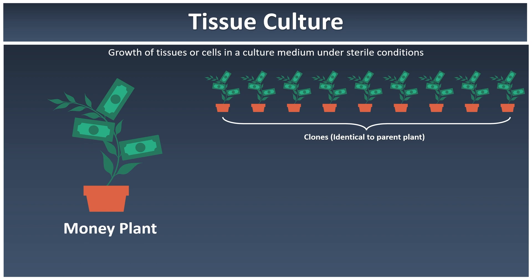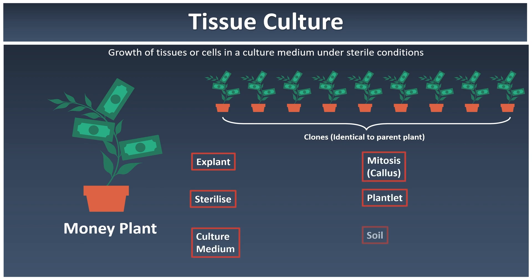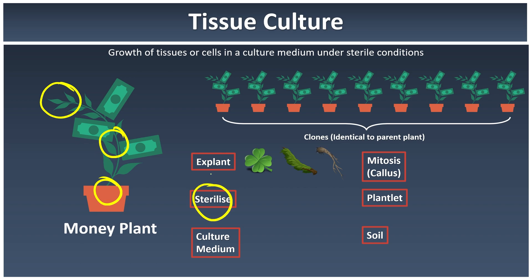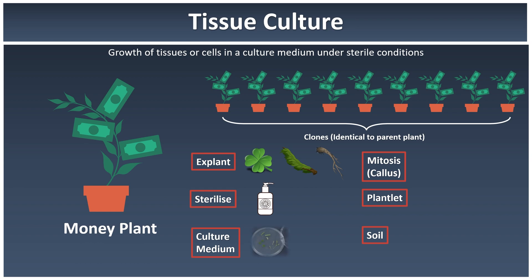Now let's learn the procedures of tissue culture. The first step is to get a sample of the plant you want to clone — either from the shoot, the stem, or the root. These samples are called explants. To make sure they are free from microorganisms, we sterilize them first, then transfer the sample into a culture medium containing all the necessary nutrients for the plant to grow.